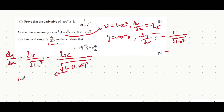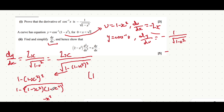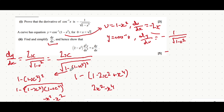Now I'd advise you to expand this out just to check if you can simplify further — and here you actually can. If we expand out 1 minus (1 minus x²)², squaring a bracket is the same as multiplying the bracket by itself. We have 1×1 = 1, 1×(−x²) = −x², (−x²)×1 = −x², so those combine to give minus 2x². Then (−x²)×(−x²) = x⁴. Remember we're doing 1 minus all of this: 1 minus 1 = 0, minus(−2x²) = positive 2x², minus x⁴. So the inside of the bracket simplifies to 2x² minus x⁴.